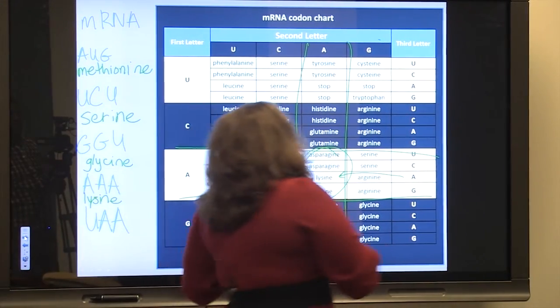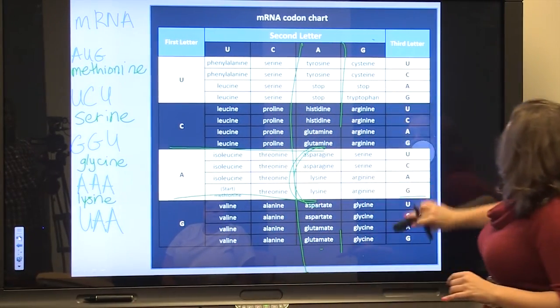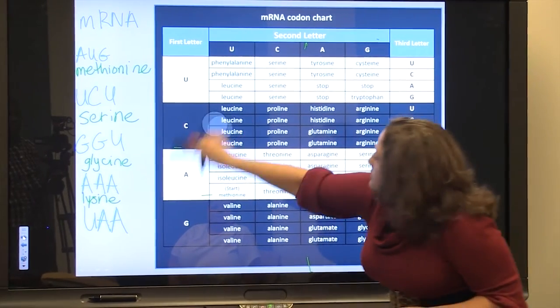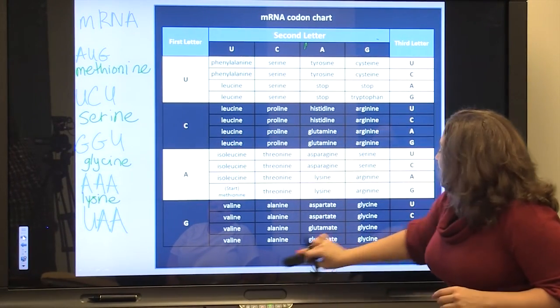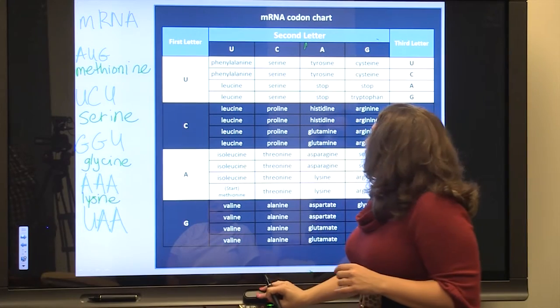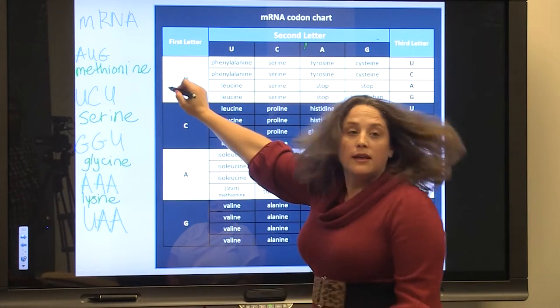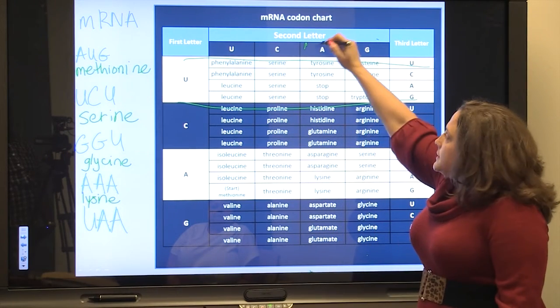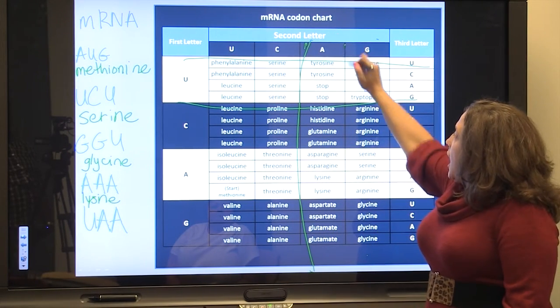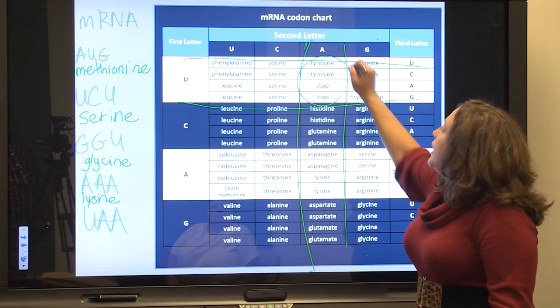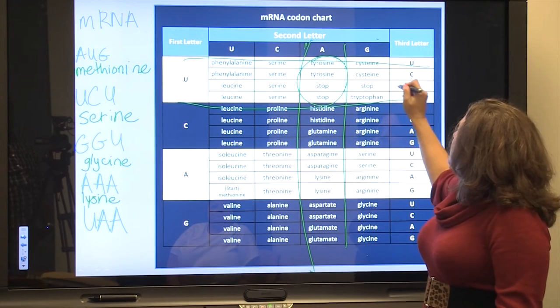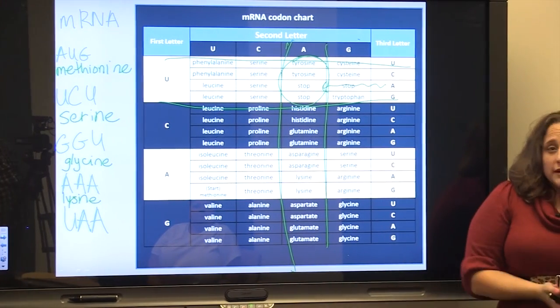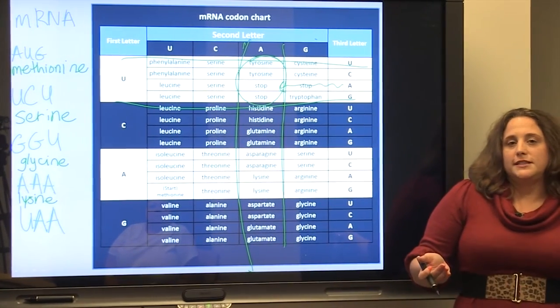And, the last one, U, A, A. Our first letter is U in the U row. Second letter, A in the A column, somewhere in there. U, A, A, trace the A over, and we get stop, which just tells the transfer RNA to not bring any more amino acids.